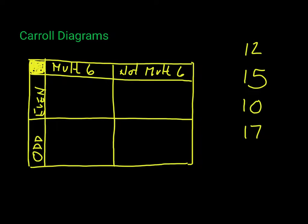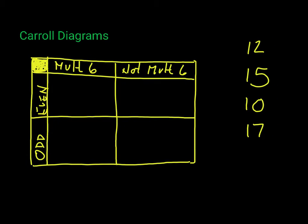Here is an example of a Carroll diagram. You'll notice a couple of features about it. This Carroll diagram has two rows and two columns, and this is pretty much how Carroll diagrams look.